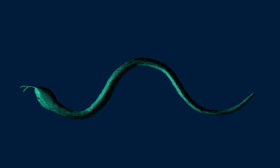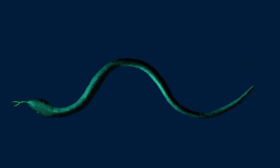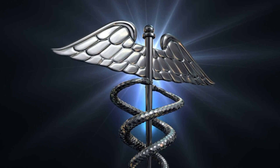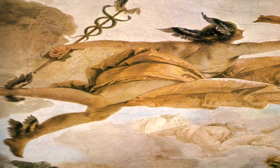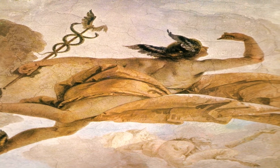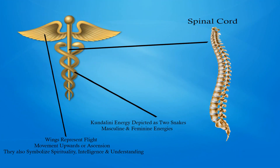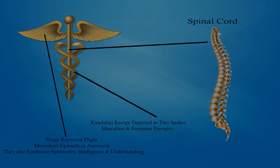As the Kundalini energy moves upwards through the spine, it is said to resemble the movements of a snake. We can see this visual representation in the medical symbol known as the caduceus, which has its origins in Greek mythology, where it was known as the staff of Hermes. If you look at the caduceus, you will immediately notice there are two snakes. The staff itself represents the spinal column. The snakes are the Kundalini energy, represented as masculine and feminine energies, hence the two snakes flowing upwards, and the two wings at the top are associated with flight or ascending upwards.